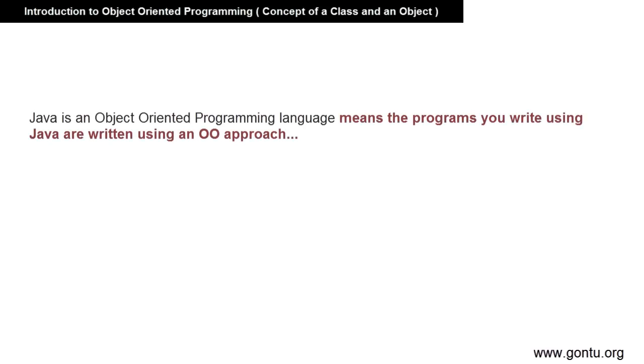Java is an object oriented programming language, means the programs you write using Java always follow the object oriented concepts or guidelines. A program is nothing more than a set of instructions which does some tasks, say sending an email to your friend or addition of two numbers.